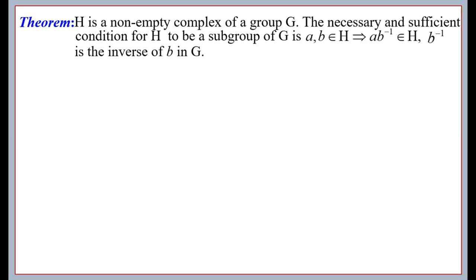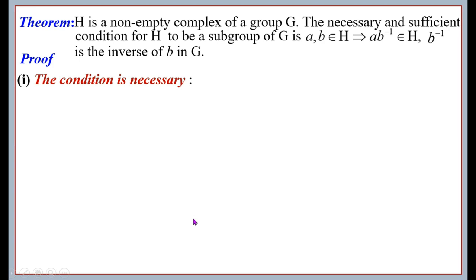Theorem: Let H be a non-empty complex of a group G. The necessary and sufficient condition for H to be a subgroup of G is: a, b ∈ H implies ab⁻¹ ∈ H, where b⁻¹ is the inverse of b in G. Proof — first, the condition is necessary.